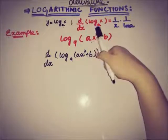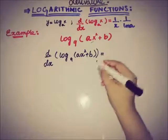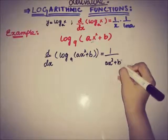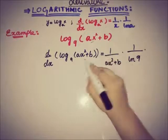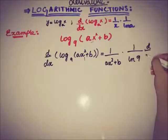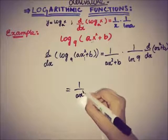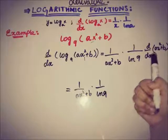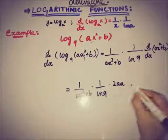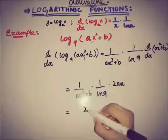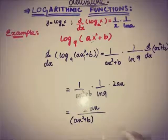Because we have proved that logarithmic function has derivative of the form 1 by x into 1 by... So the derivative is 1 by ax squared plus b into 1 by log of 9 into the derivative of ax squared plus b, which is equal to 1 by ax squared plus b. The derivative is equal to 2ax, and b is constant so 0. And we can also write it as 2ax over ax squared plus b and natural log of 9. This is the answer, this is the derivative of this type of logarithmic function.